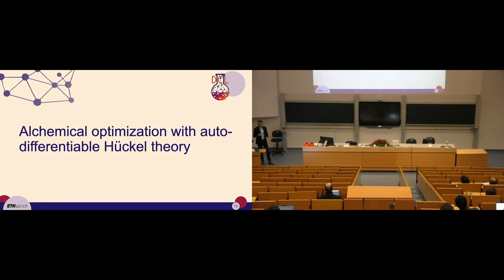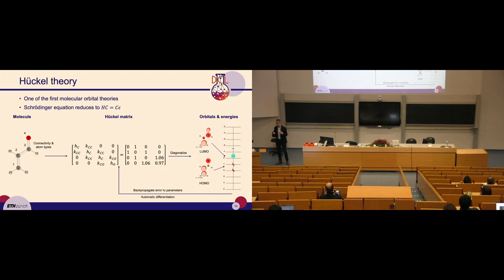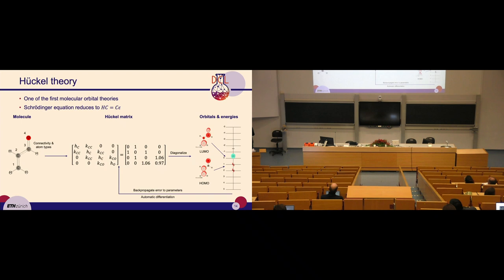The second application is alchemical optimization with autodifferentiable Hückel theory. Hückel theory is the favorite quantum chemical theory of organic chemists, with a very simple formulation of the Schrödinger equation. We take the molecule and its molecular graph and build the Hückel matrix with atom and bond parameters. We diagonalize this matrix, get orbitals and their energies, and the HOMO-LUMO gap. If we code this in an autodifferentiable framework, we can back-propagate errors with reference to some higher level of theory, update parameters, and do other things.